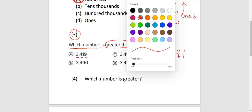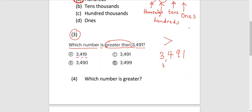Option A is 3,419. Check if it is greater. It is 3 here. It is 3. This is 4. This is 4. The numbers are the same. So you can't use that to judge. This is 9 here. But this is 1. 9 is greater than 1. Therefore, this number is not greater.